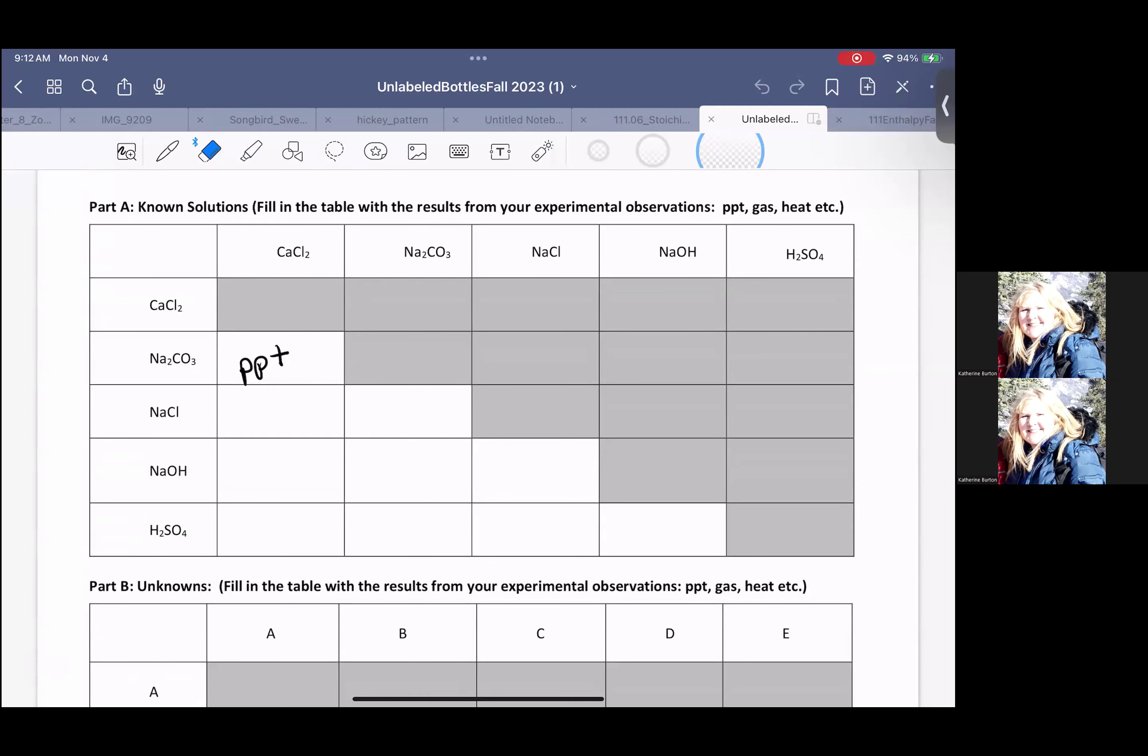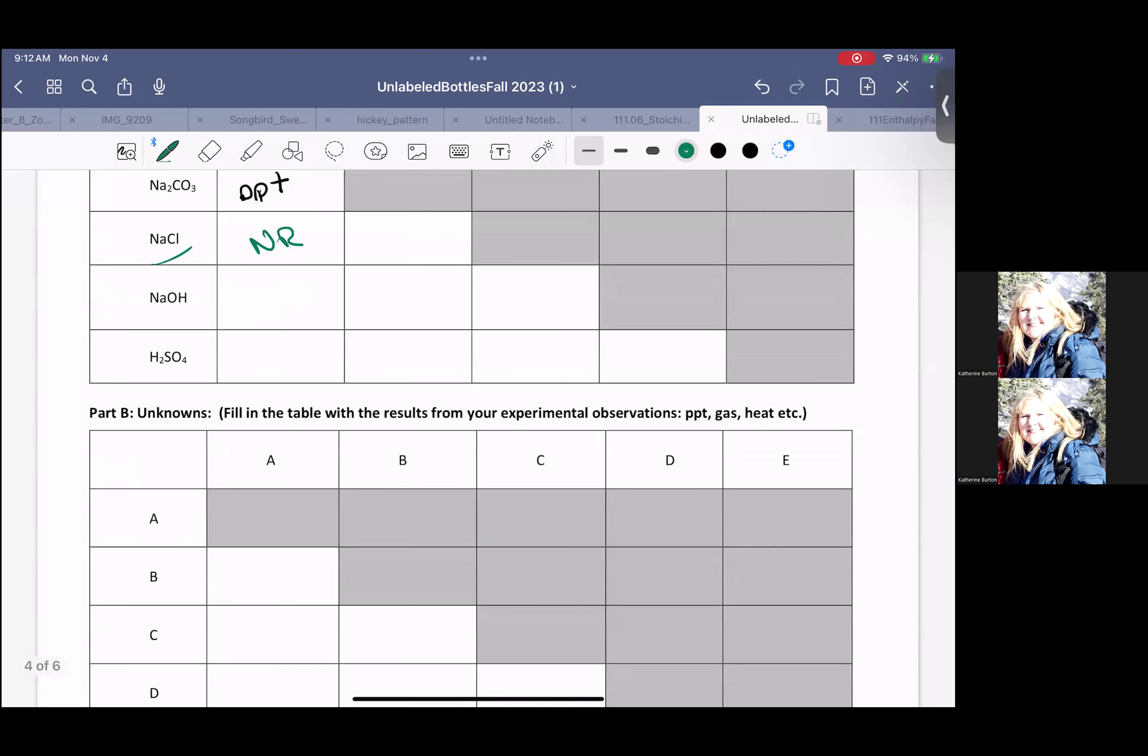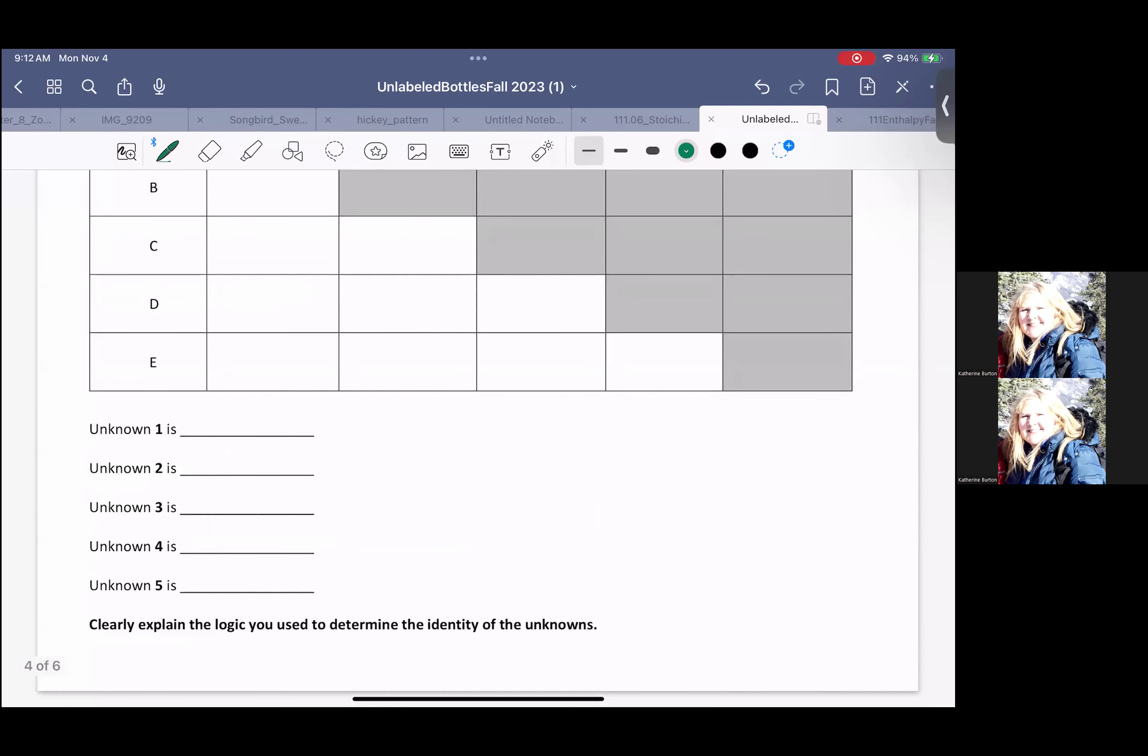Your precipitate in this case, you would have no reaction because in the case of sodium chloride plus calcium chloride, you might have no reaction. You identify your unknowns from the comparison of the knowns to the unknowns, and then you need to write some equations.